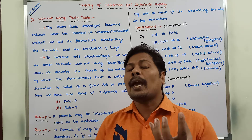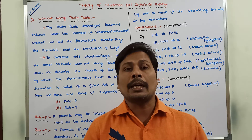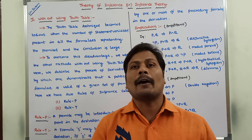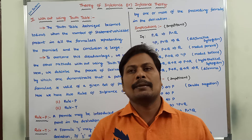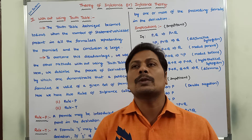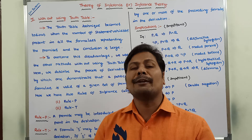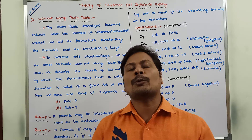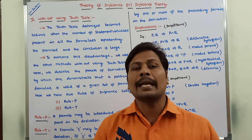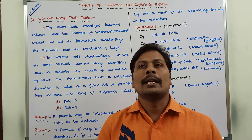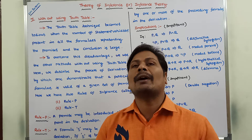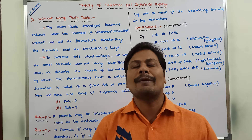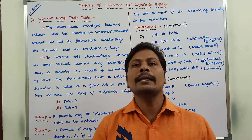So we have to use some other procedure to derive the conclusion from the given premises and check whether the conclusion is valid or not. In that procedure, we have to use two rules of inference: first one is Rule P, and second one is Rule T. In addition to the rules of inference, we have to use some implication formulas and equivalence formulas, which are used in the derivation using Rule P and Rule T.